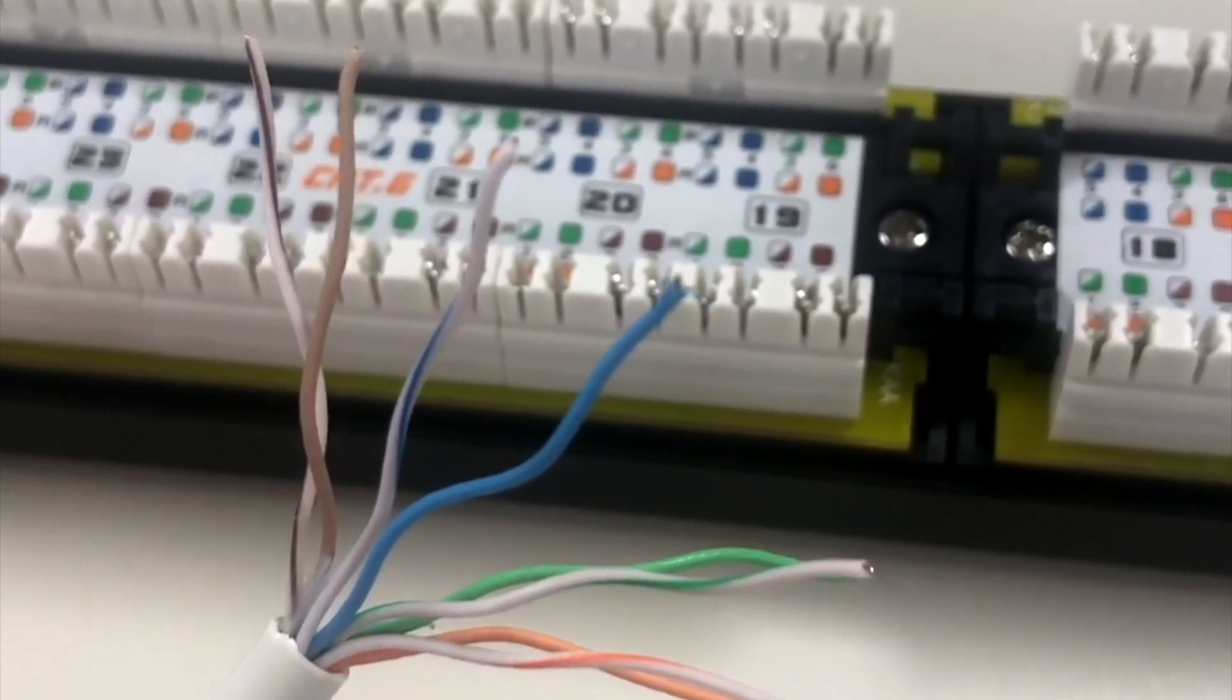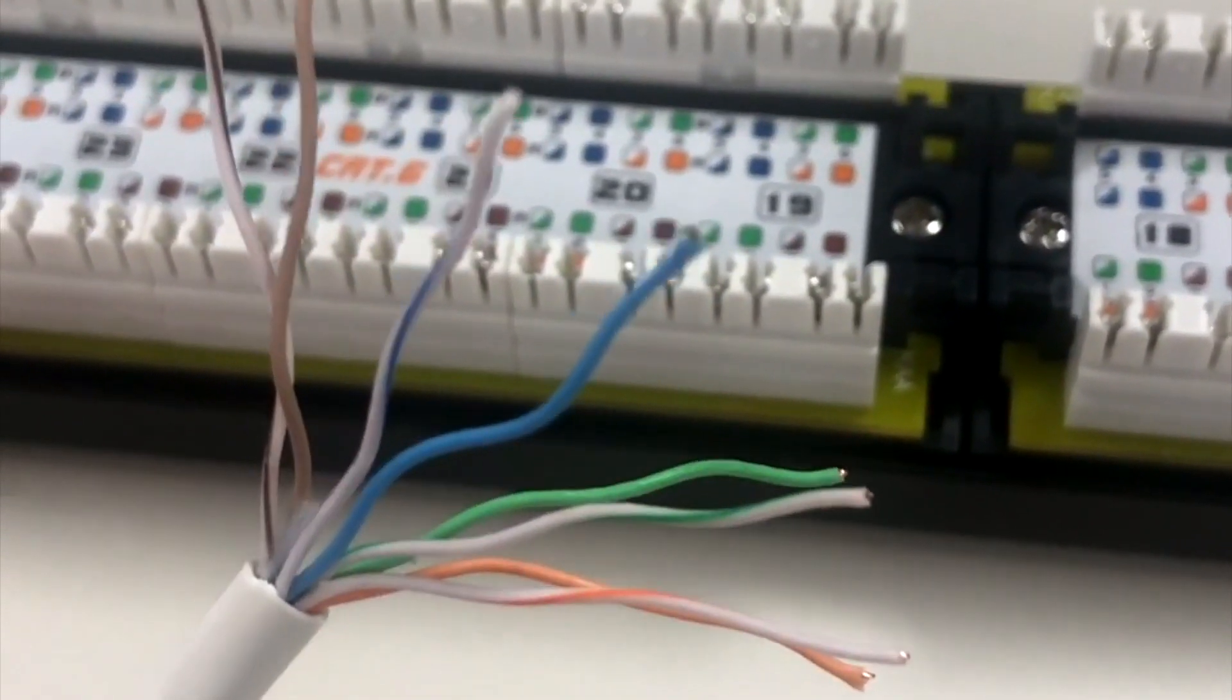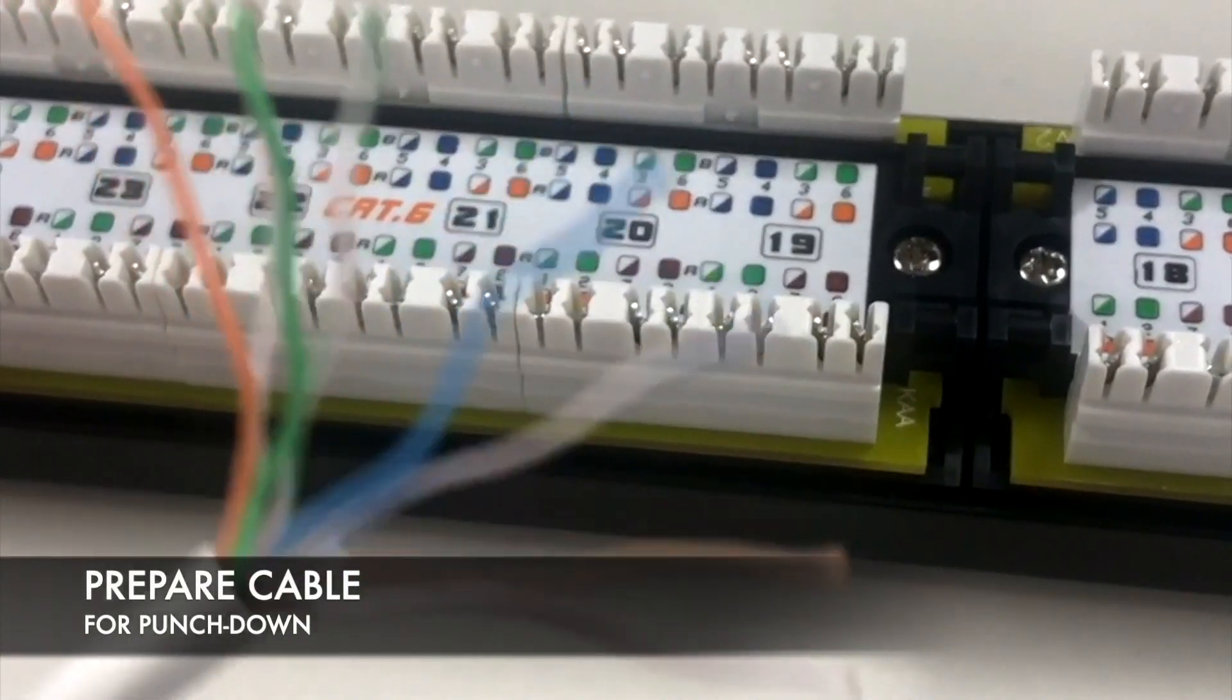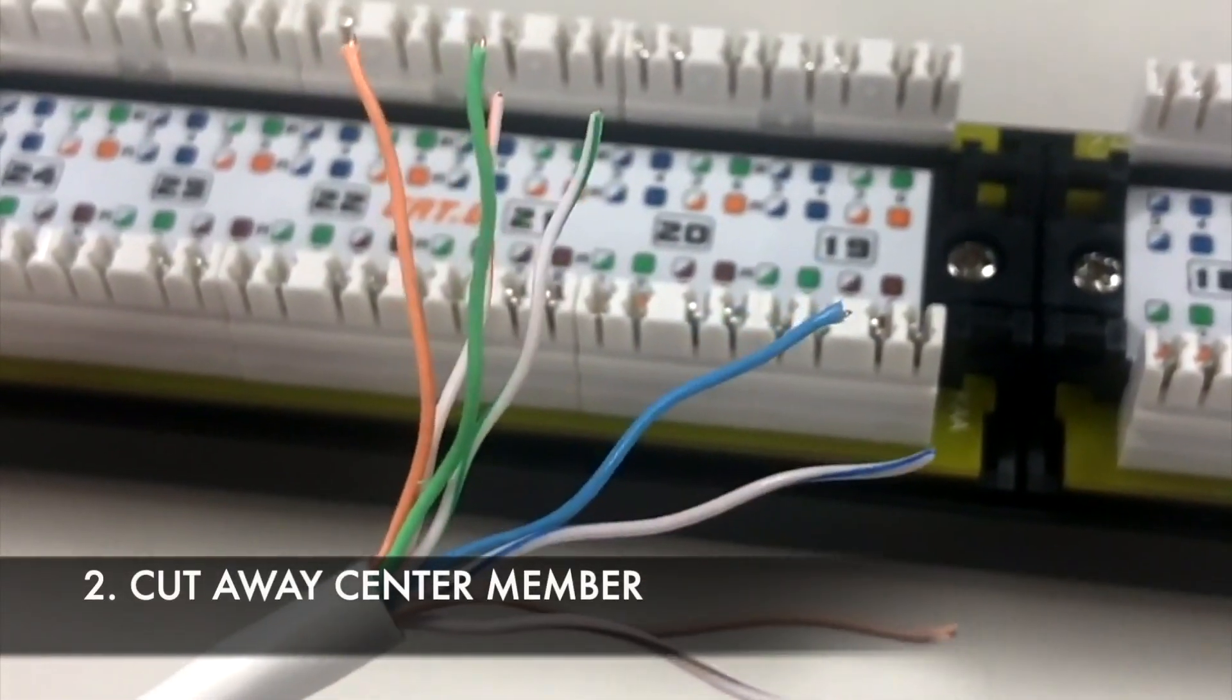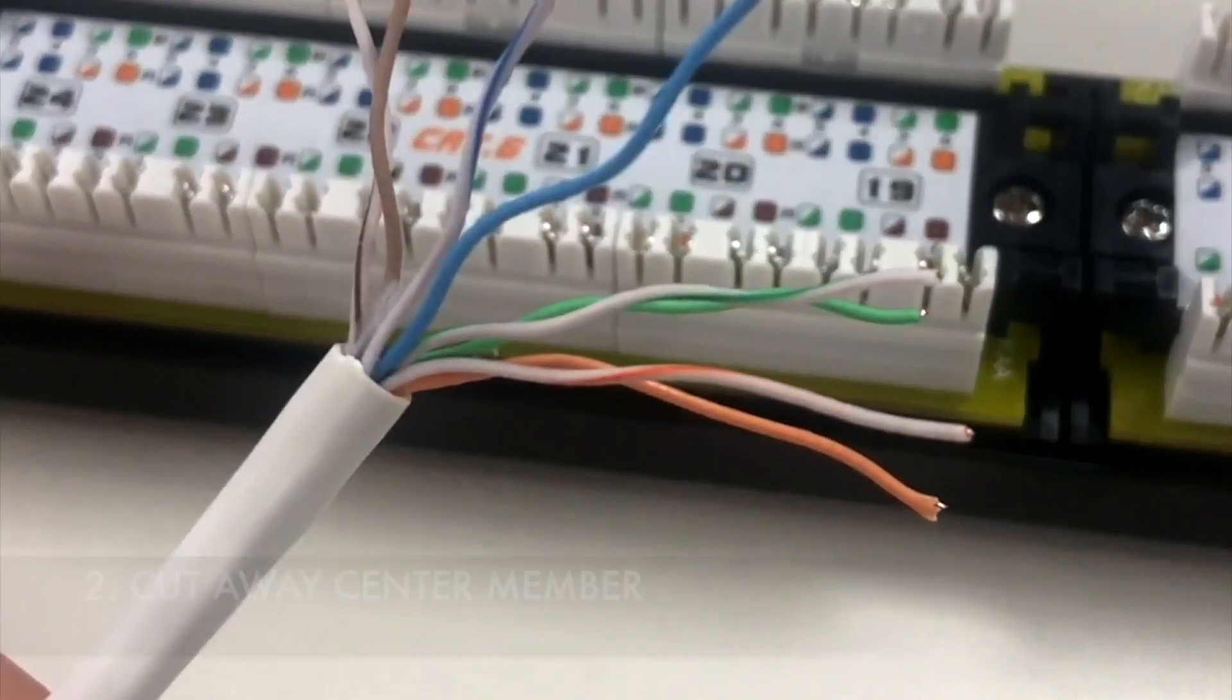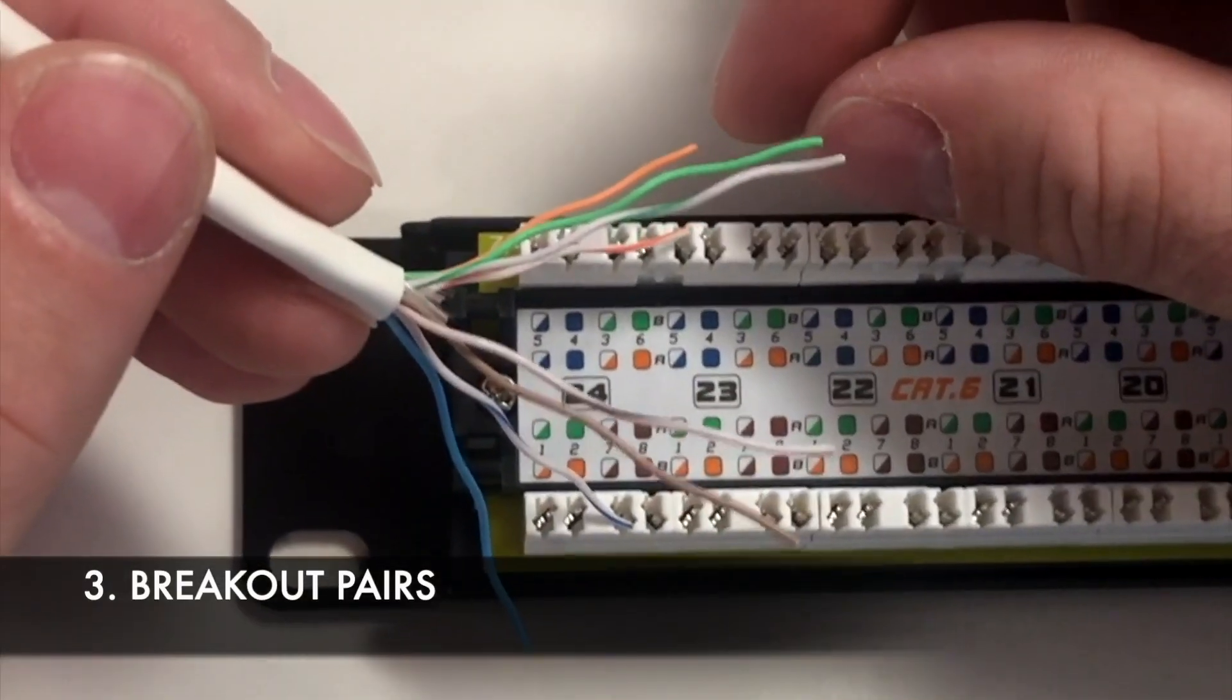Before you punch down a cable into the ProFit patch panel, you first need to prepare it. First, cut away about 1¼ inches of jacket. Next, cut away the center member from the exposed section. Finally, break out all the pairs.